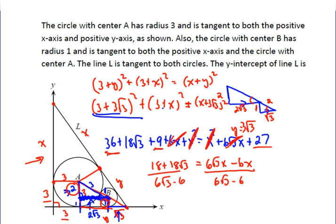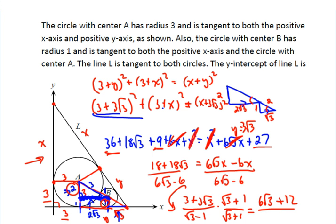Which simplifies when you factor out the 6 to (3 plus 3 root 3) over (root 3 minus 1). And then just multiply the top and the bottom by root 3 plus 1 to clear the denominator, and you end up with 3 root 3 plus 3 root 3 is 6 root 3, and then you've got 9 plus 3 which is 12. All over, well root 3 minus 1 times root 3 plus 1 is just going to be 2, so our X turns out to be 3 root 3 plus 6.